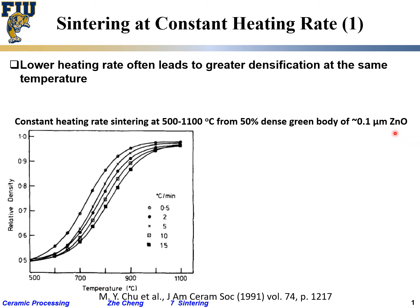For zinc oxide, the powder we start from is 0.1 micron zinc oxide powder, with a green density of roughly 50%, which means we are starting from roughly 50% dense. We are doing isothermal sintering with different heating rates and also with different isothermal temperatures.